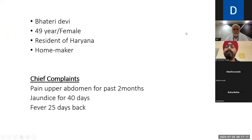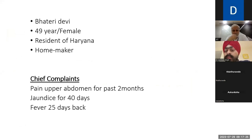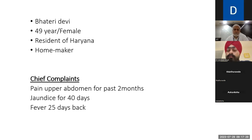My patient, Teri Devi, 49-year-old female, resident of Uriana, homemaker by occupation. She presented to us with chief complaints of pain in the upper abdomen for the past 2 months, jaundice 40 days back, and fever 25 days back.